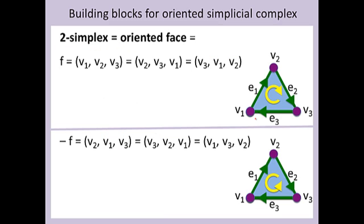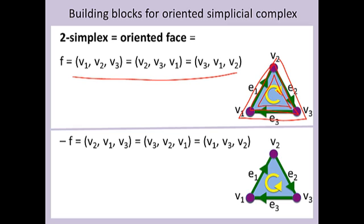For example, v1, v2, v3, as well as v2, v3, v1, as well as v3, v1, v2 — these all represent the same clockwise oriented face. While if I reverse the order, for example v3, v2, v1, then I travel in the opposite direction and I get a counterclockwise face.